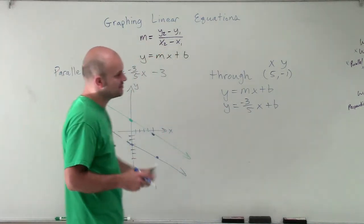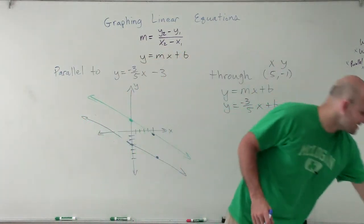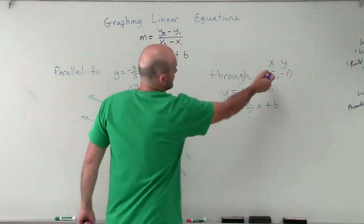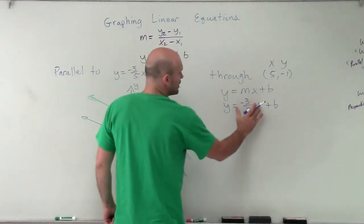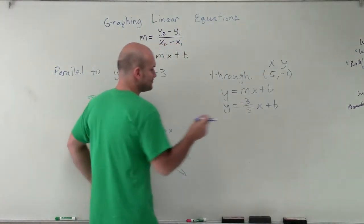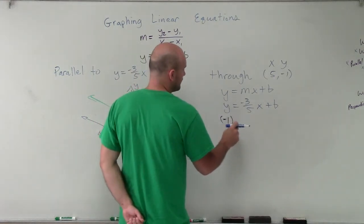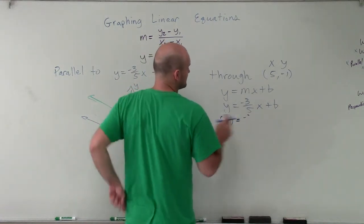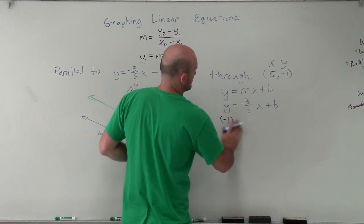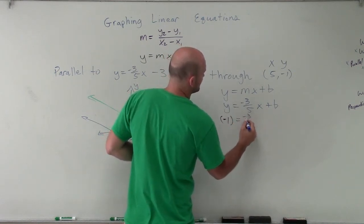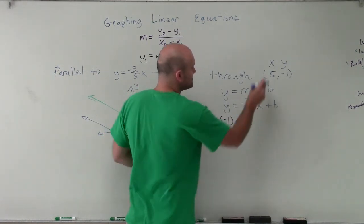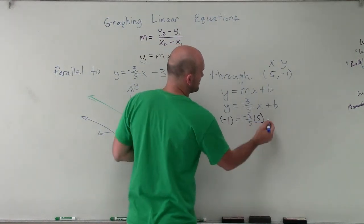So to do that, what I'm going to do is I'm going to plug in our x and our y value for this point into our equation to find the value of b. So I put a negative 1 in for y equals negative 3 fifths times x, which is 5, plus b.